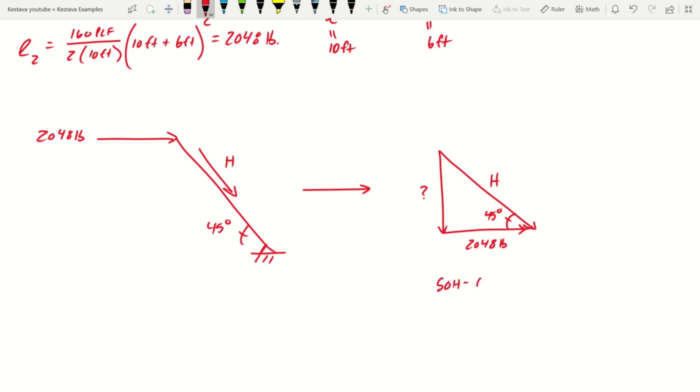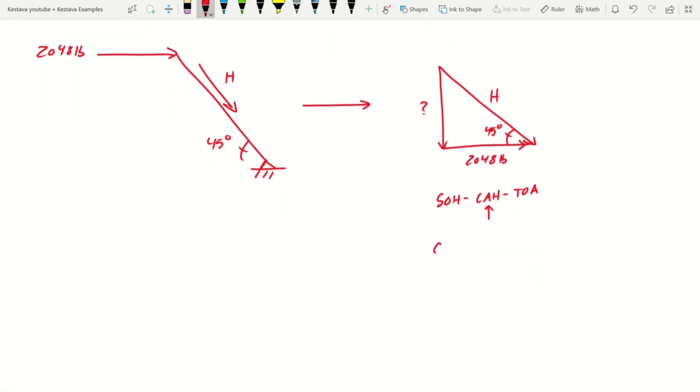So we can just do SOHCAHTOA. This is pretty rudimentary, but I'm going to do it anyway in case no one is familiar. We're going to use the CAH, which means cosine theta, which is 45 degrees, equals adjacent, which is 2,048 pounds, over hypotenuse. And we solve for H, which gets us 2,896 pounds as an axial force in each brace at eight feet on center.